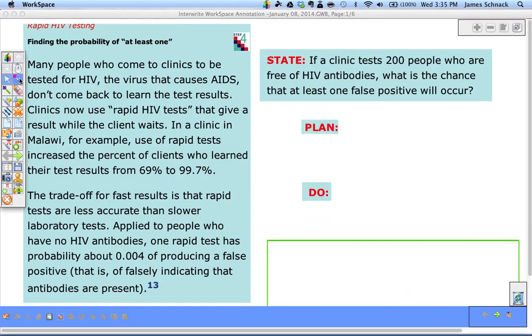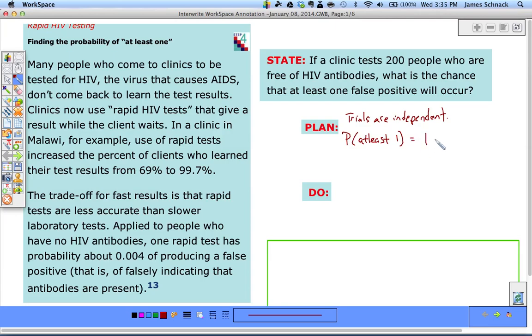We need to create a plan and carry it out. Our plan is that trials are independent, which is important because then we can find probability without worrying about conditional probability. To find the probability of at least one, that's going to equal 1 minus the probability of none. That's another important thing.